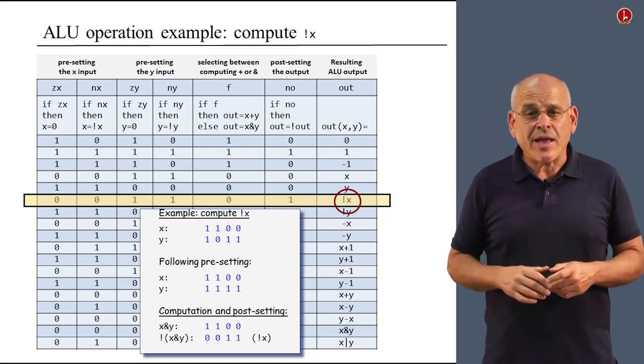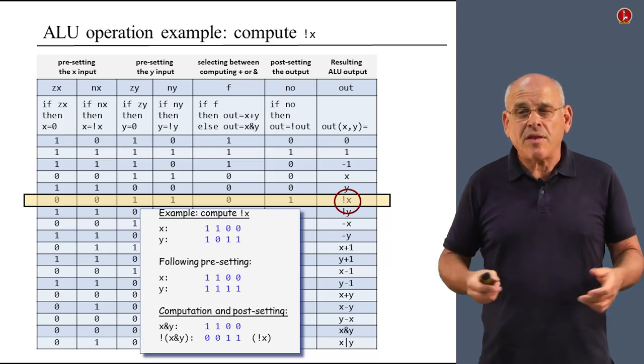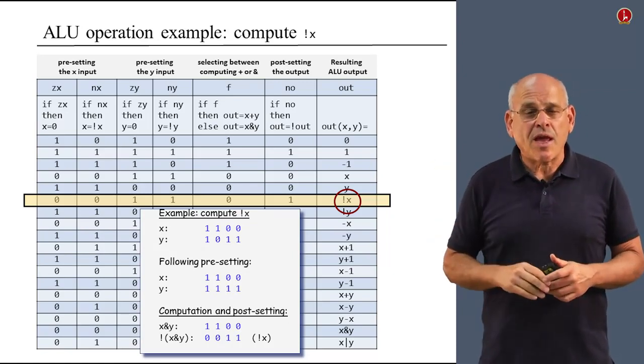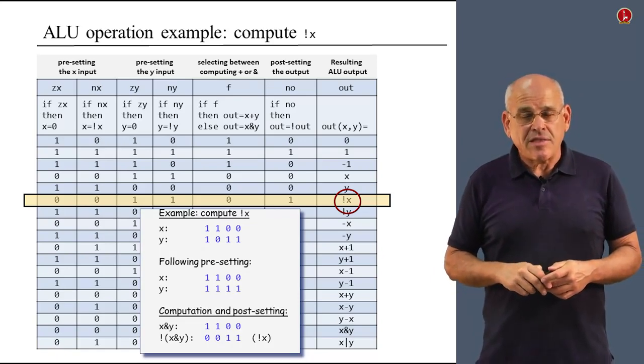If you look at the original x, which was 1 1 0 0, we got not x. So we have proved that this row in the truth table performs as advertised.